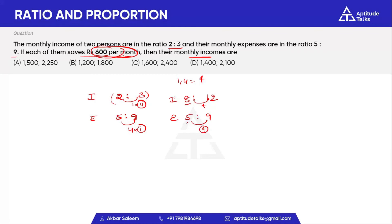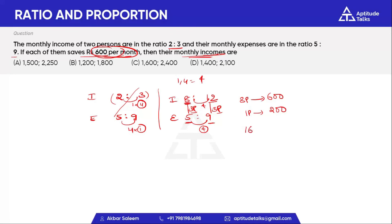Starting income is 8 rupees and expenditure is 5 rupees, so savings is 3 parts. This savings of 3 parts corresponds to 600 rupees per month, giving 200 rupees per part. Income of the first person: 1 part is 200, so 8 parts is 1,600. Income of the second person: 12 parts is 2,400. This is the direct option.